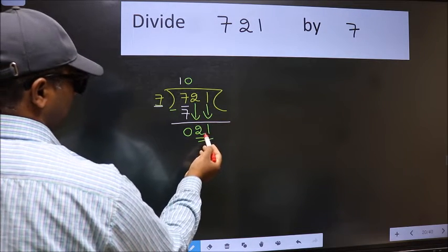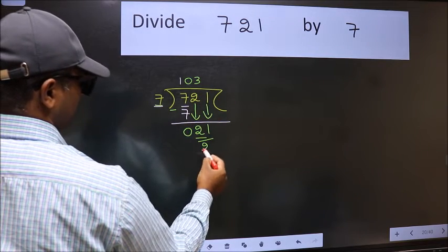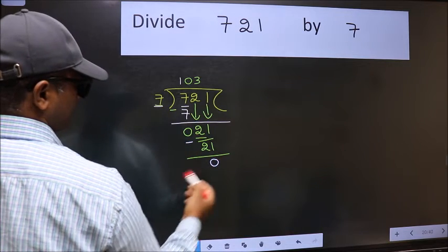Now 21. When do we get 21 in the 7 table? 7 times 3 is 21. Now we subtract and get 0.